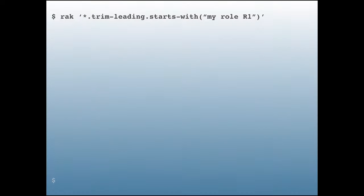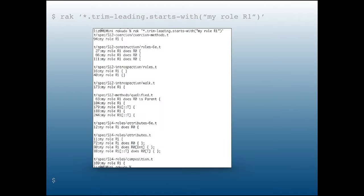You can also use whatever-code, recognized by starting with 'star dot'. For example, this strips all spaces at the beginning of each line and then selects lines that start with 'my role R1'. Those are all the places in RAKUDO and the spec test that have 'my role R1' at some point in the line with only whitespace before it.